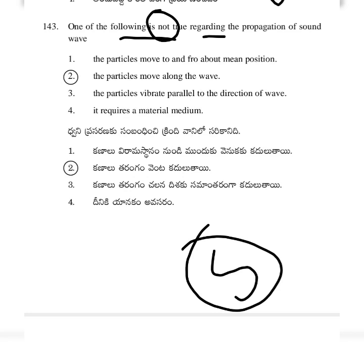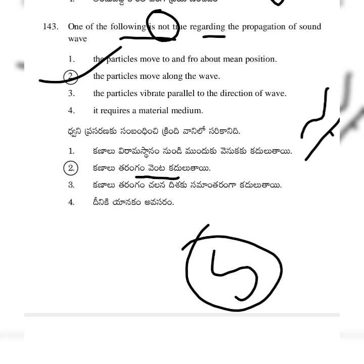Propagation of sound wave. Option 2: the particles move along the wave. The particles move to and fro about the mean position. The particles vibrate parallel to the direction of the wave. It requires a material medium.